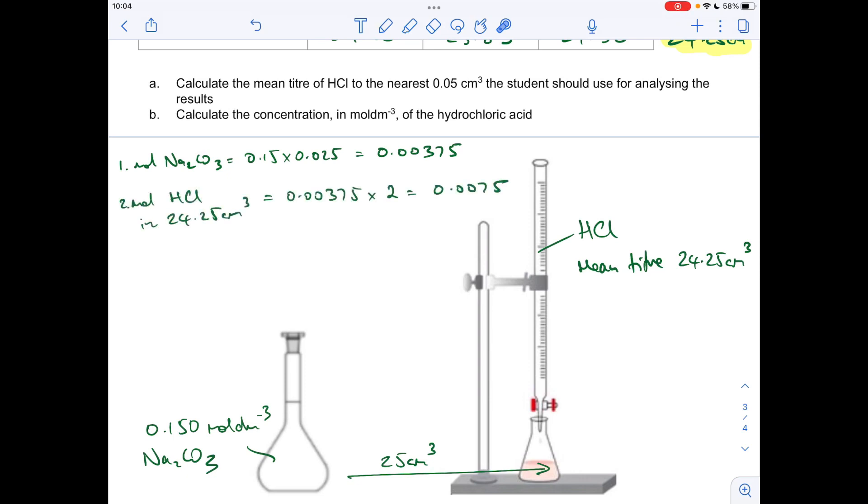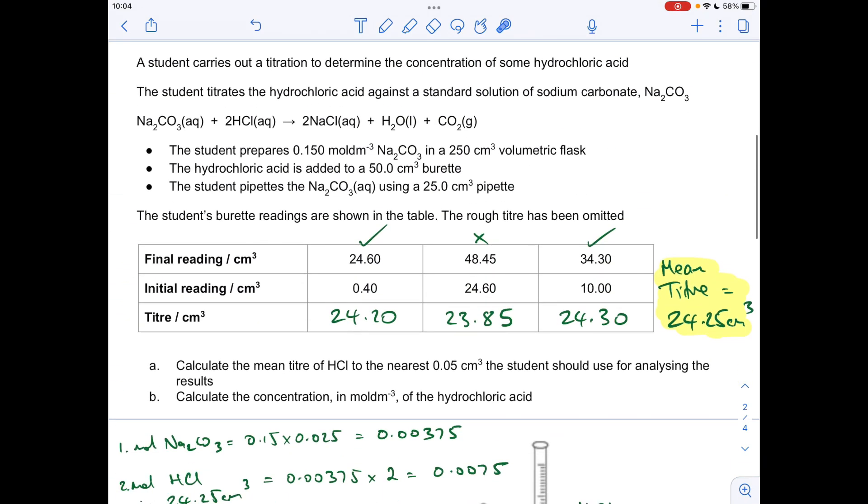Step two: we need to work out the moles of hydrochloric acid in that mean titra of 24.25 cm cubed. You can see I've written up there—that's the moles of sodium carbonate times two, giving us this value here. Why have I done that? It's because the mole ratio in the balanced equation is one to two, so we knew the moles of that, we want to find the moles of that, so we double it.